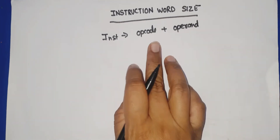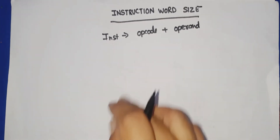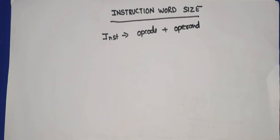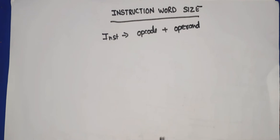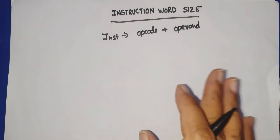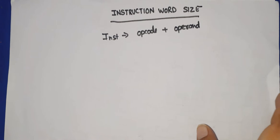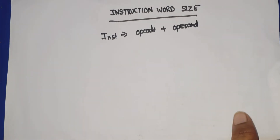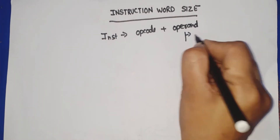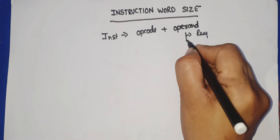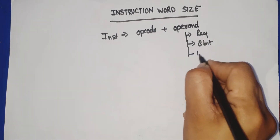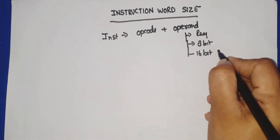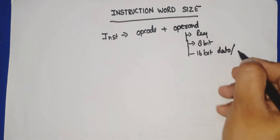Opcode is the operation code, which tells what task will be performed by the microprocessor. The opcode can be a register, a data value, or a memory address, depending on the instruction. So the operand can be a register, an 8-bit data value, a 16-bit data value, or an address.